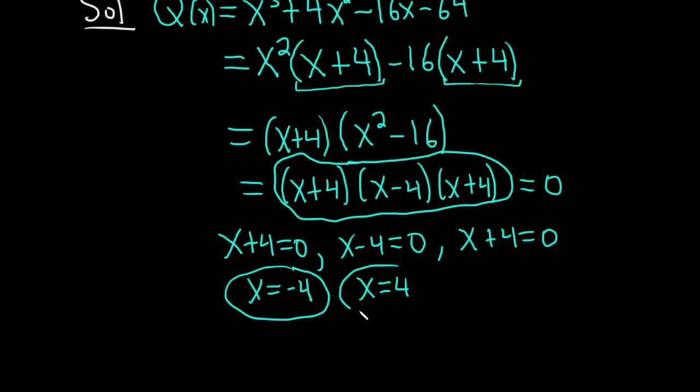Subtract 4 again, so you get x equals negative 4. That's another answer. So negative 4 appears twice. In this case, we say that it has multiplicity 2 because it occurs twice in our solution. And x equals 4 has multiplicity 1 because it only appears once.